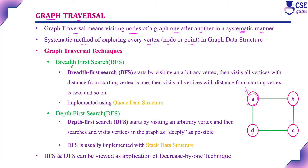There are two important techniques under graph traversal: one is breadth first search and another is depth first search. Breadth first search starts by visiting an arbitrary vertex, then visits all vertices at distance one from the starting vertex — marking them as visited. Then it visits all vertices at distance two, then distance three, and so on — level by level.